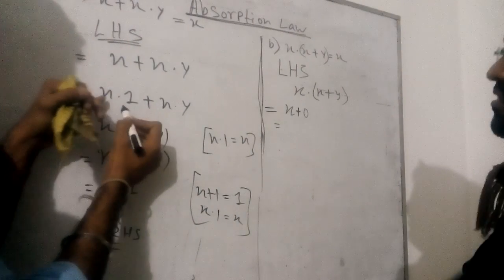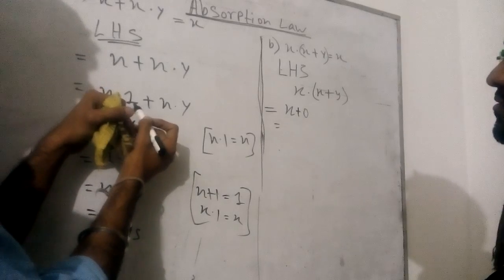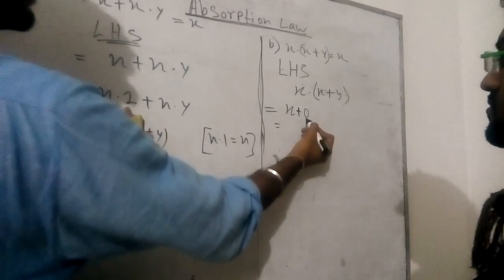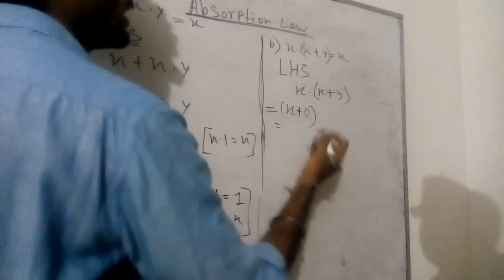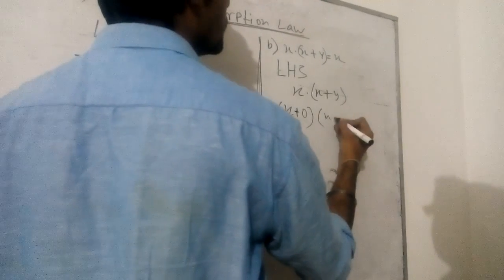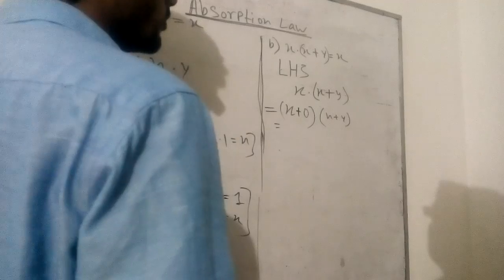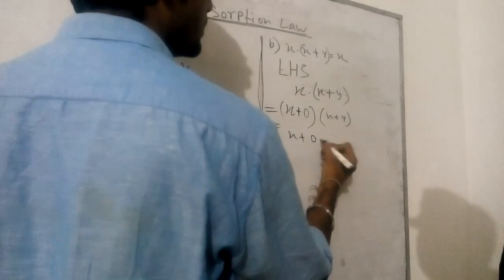Here you can see we took x into 1, and the duality says that 'into' will be changed into 'plus', and 1 will be changed into 0. So it is right. From our distributive law we can write x plus 0 into y.